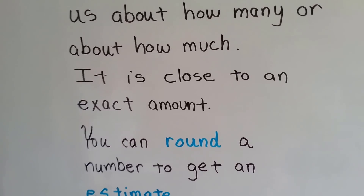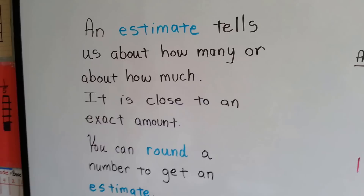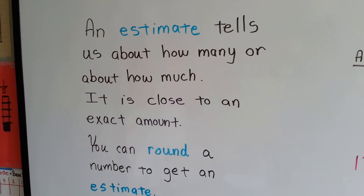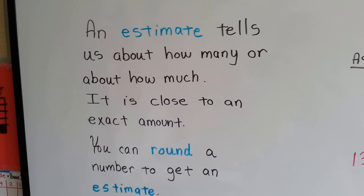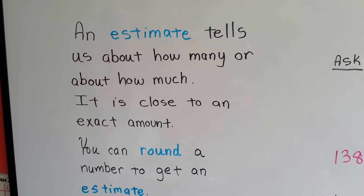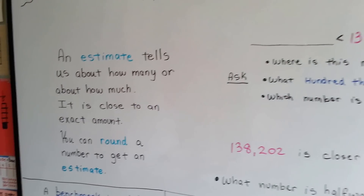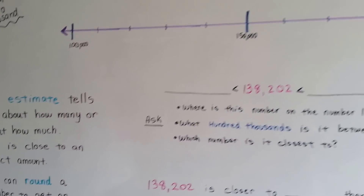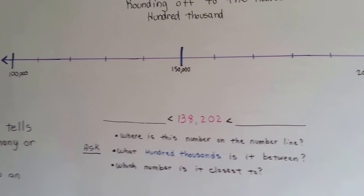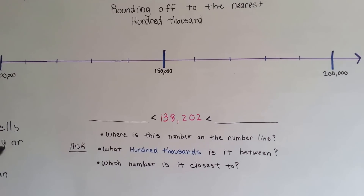Have you ever heard your family say, 'I'm going to get an estimate on replacing the roof'? And a bunch of roofers come out and say, 'I'll do it for this much,' or 'I'll do it for this much, but I'll give you this good quality.' It's not going to be an exact amount — it's just close so that your family knows how much the roof is going to cost and how much they need to spend. Rounding off is pretty much like that.